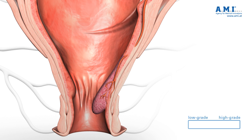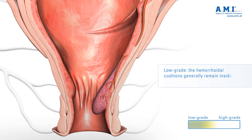for the purposes of this DVD, we simply refer to the low and high grades of hemorrhoids. Low corresponds to grade one and grade two of the Goeliger classification — those stages of the disease where the hemorrhoidal cushions generally remain inside the anal canal.